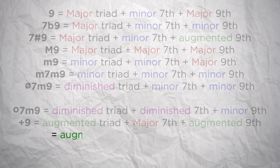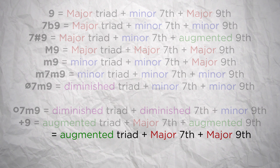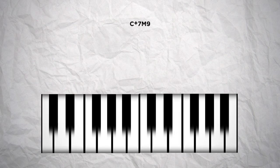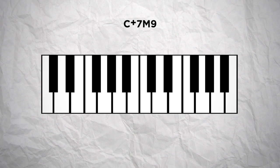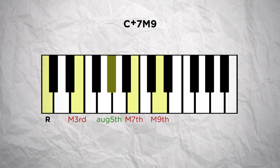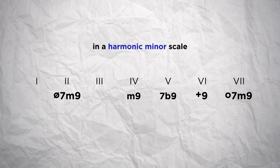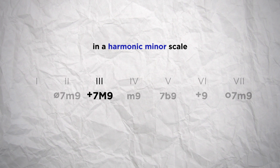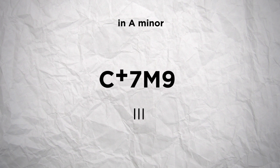You could also have an augmented triad with a major 7th and a major 9th — that would be noted plus 7th major 9th. So for a C plus 7th major 9th chord, that would be the root note C with the major 3rd E, the augmented 5th G sharp, the major 7th B and the major 9th D. This is a type of chord you could find on the 3rd degree in a minor tonality, so this C plus 7th major 9th chord could be the 3rd degree in the tonality of A minor.